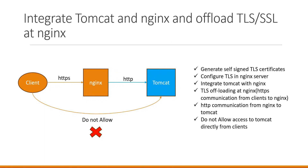In the Tomcat server, we deploy our applications — web services or web applications. Our main goal is to allow access to these web applications or web services via a reverse proxy, which in this case is the Nginx server. The clients will access the web applications deployed in Tomcat through the Nginx server.